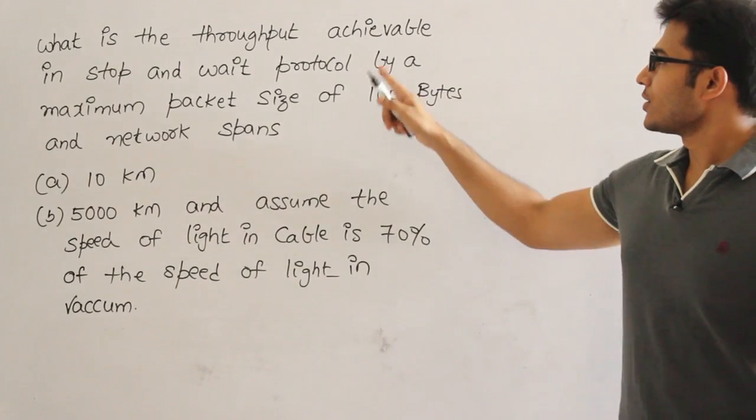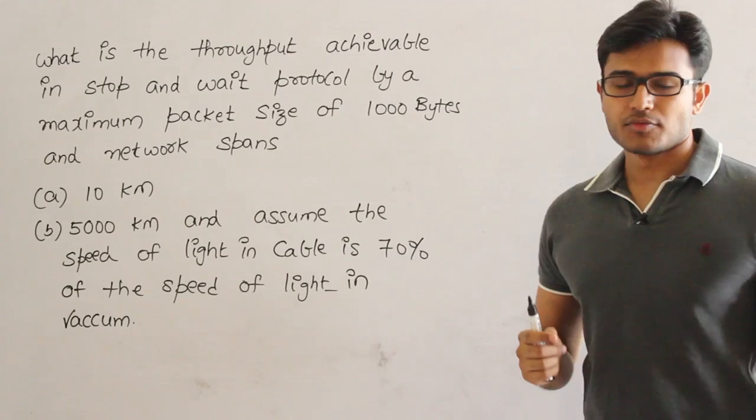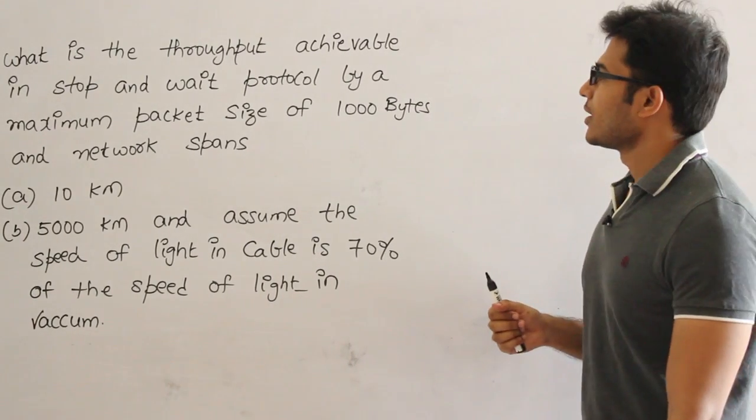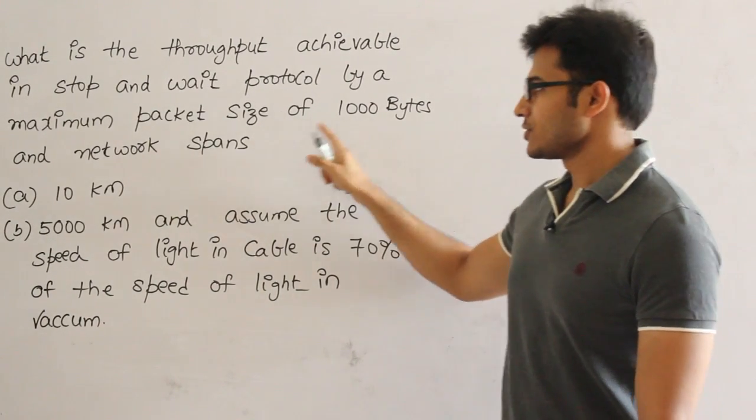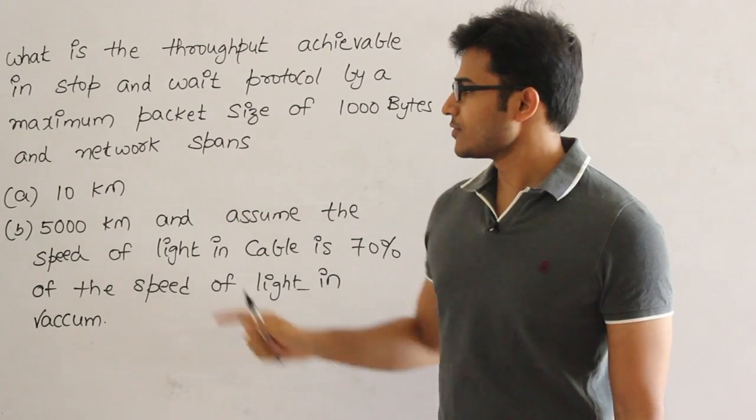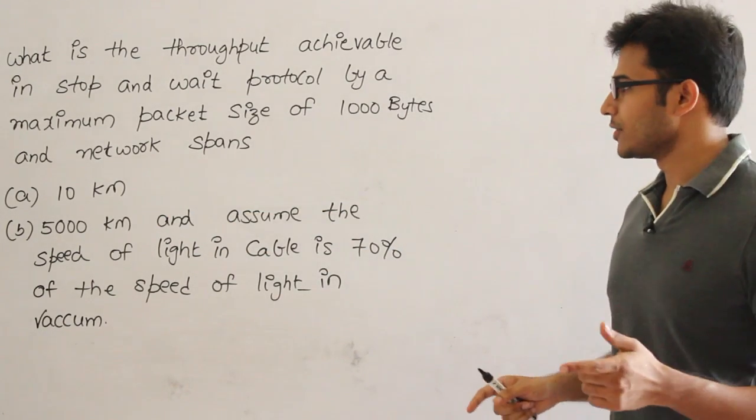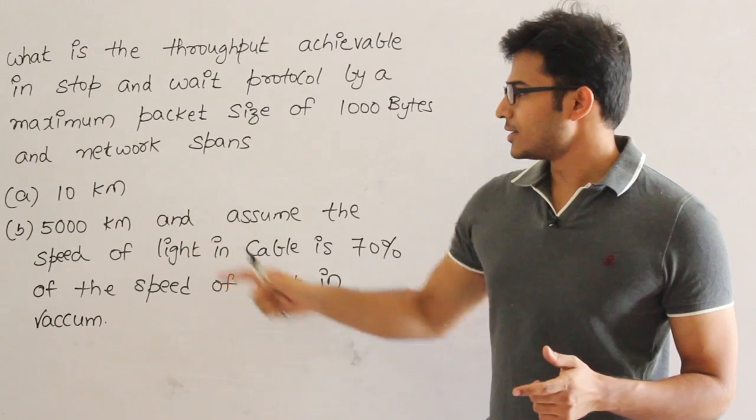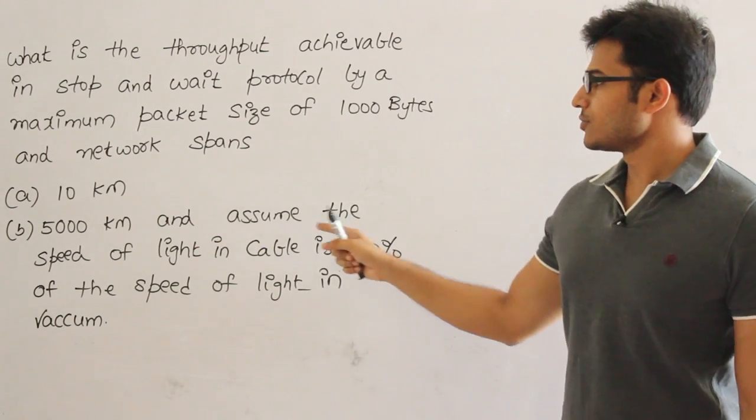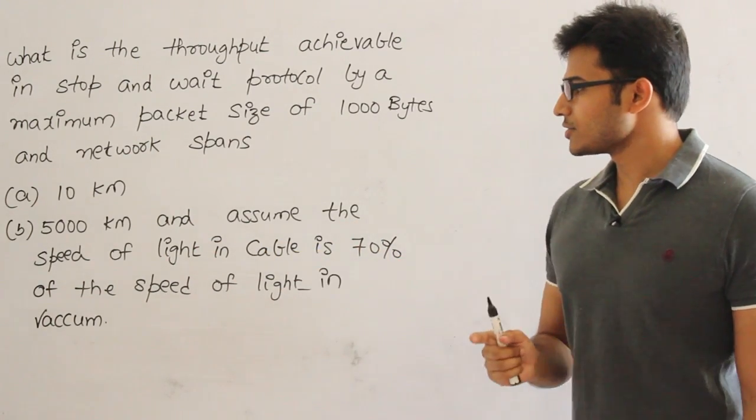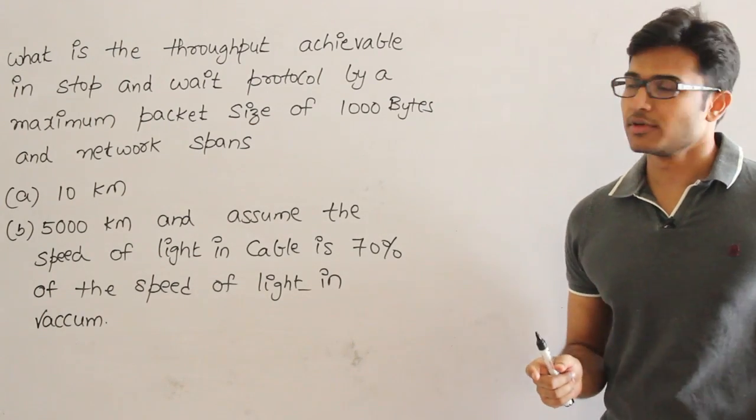Now let us look at this problem. What is the throughput achievable in stop and wait? They are talking about the throughput by a maximum packet size of 1000 bytes and the network spans, which means they are giving the distance as 10 kilometers for A and B is 5000 kilometers. Assume the speed of light is 70% of the speed of light in vacuum. That is what they are given.